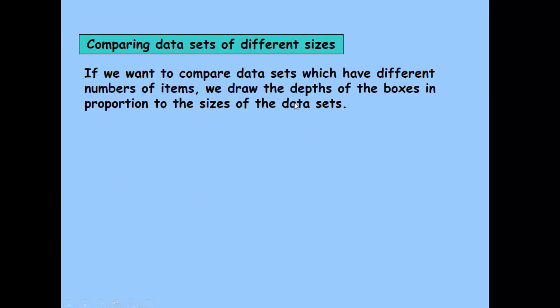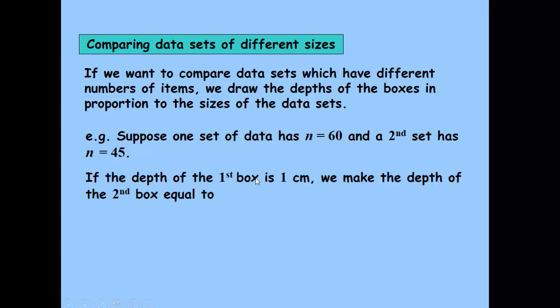I mentioned this earlier, but we do sometimes consider the depths of the boxes if the proportions are different for the sizes of the data set. So for example, if we had a data set with 60 items and a second one with 45, and we made the depth of the first box one centimetre, as 45 is three quarters of 60, we would make the depth of the second box three quarters of a centimetre.